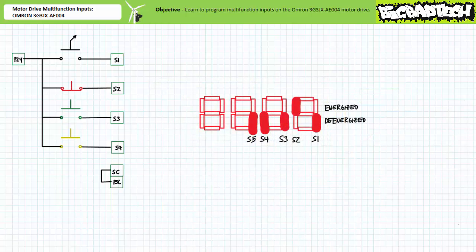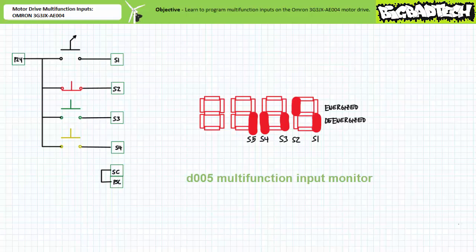Before we bring this lecture to a close, allow me to demonstrate an extremely handy feature on the OMRON 3G3JX AE004 motor drive — namely remote input monitoring. Given the input devices may be remotely located or otherwise inaccessible, this motor drive allows the means of directly monitoring and displaying the status of the five inputs. A technician does so by navigating to monitor or display function D005, multifunction input monitor. The data display will show five digital indicators; right to left, these represent the status of inputs S1 to S5. The top half of the display means the input is energized, and the bottom half means the input is not energized. Given the input wired to S2 is normally closed, note this drive in its deactivated state would show S2 as energized.